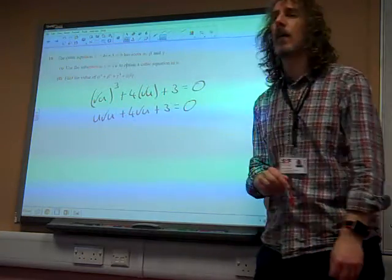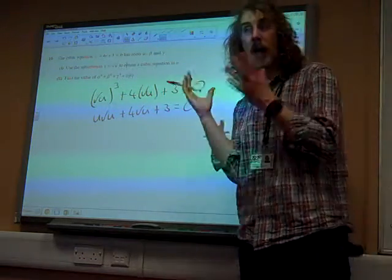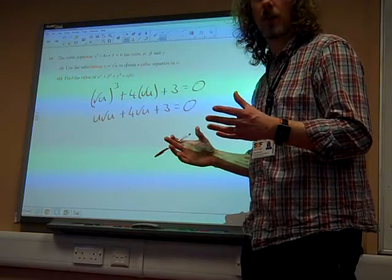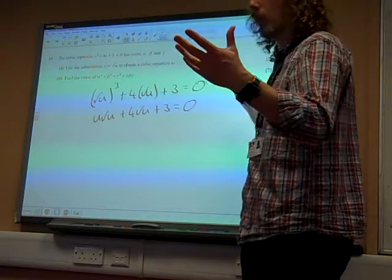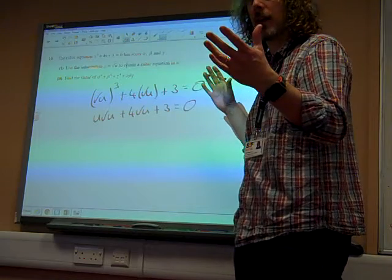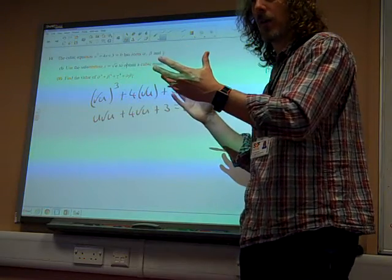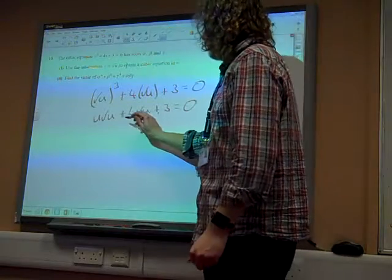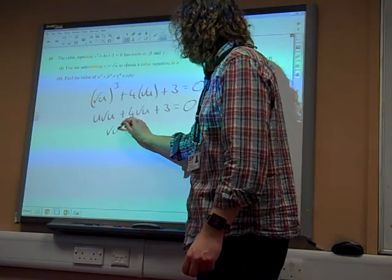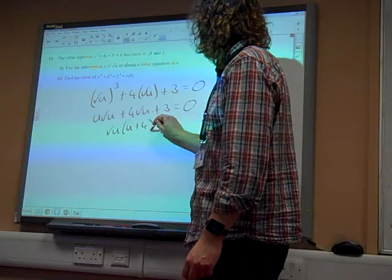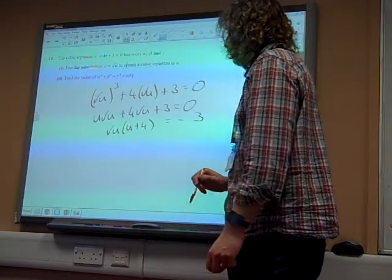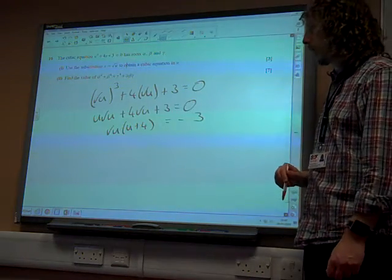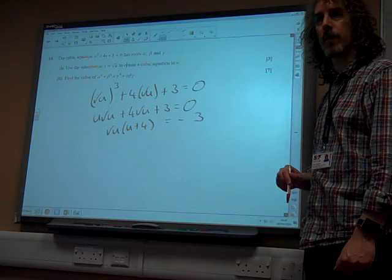Now, the aim here is we need to square this to get rid of the root u, and to do that, we could just square everything, but actually it works better if we isolate the root u bits and square them, and then have the other bits happening. So what have we got? We've got root u times (u plus 4) equals minus 3. That's what we want to get to from our equation before we square it.